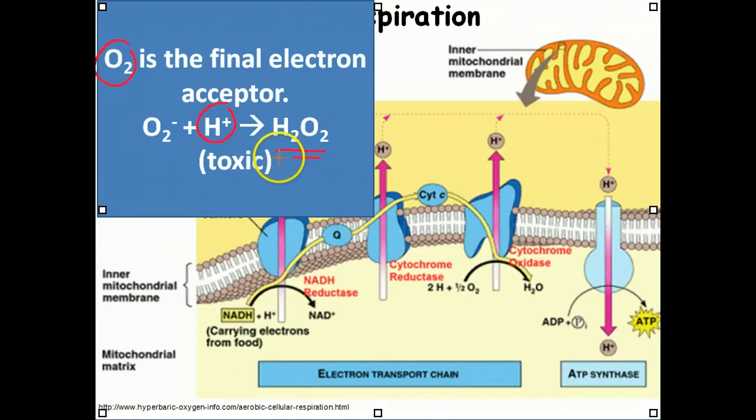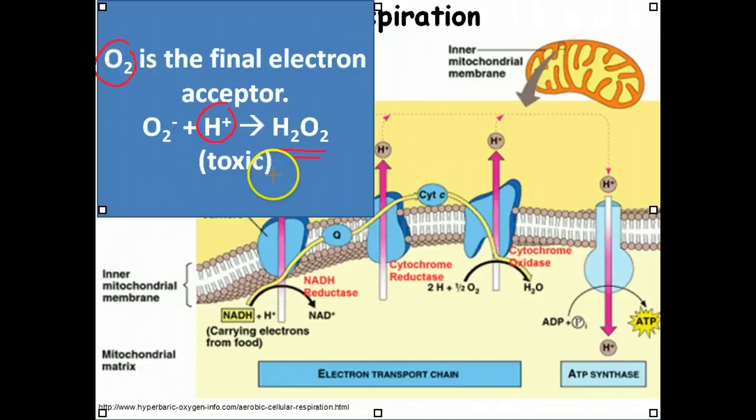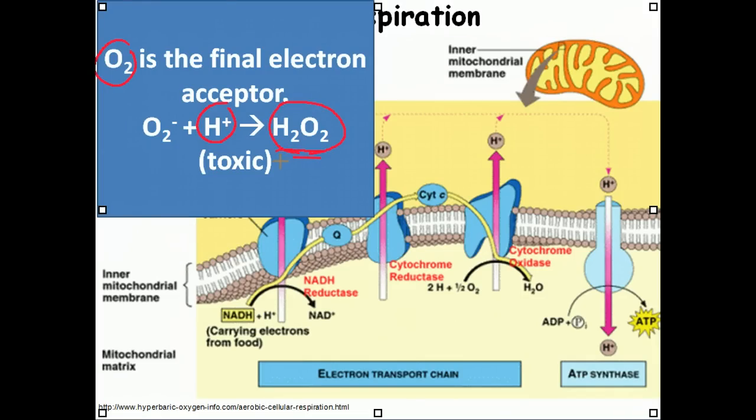Remember, water only has one oxygen. This is two oxygens. So instead of water, it's hydrogen peroxide. In low concentrations, the cells can survive. But when this hydrogen peroxide is continuously made, as the concentration increases, it becomes very toxic to the cells.